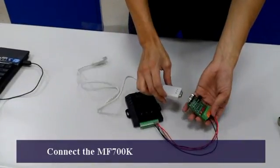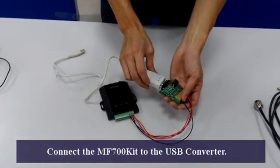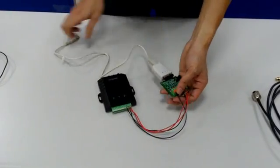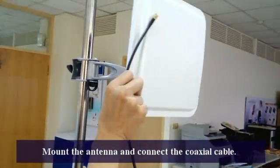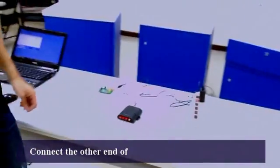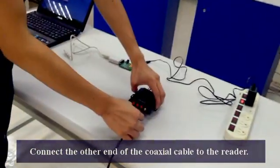Connect the MF700 Kit to the USB converter. Mount the antenna and connect the coaxial cable. Connect the other end of the coaxial cable to the reader.